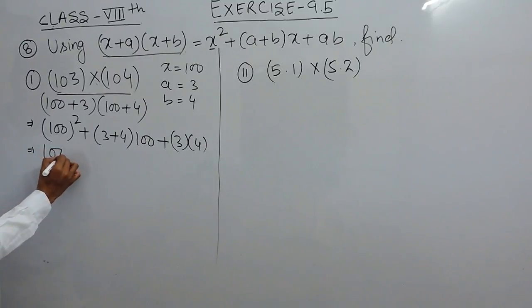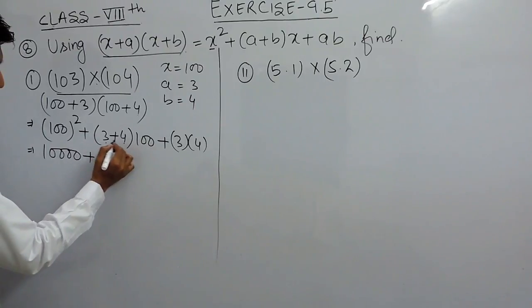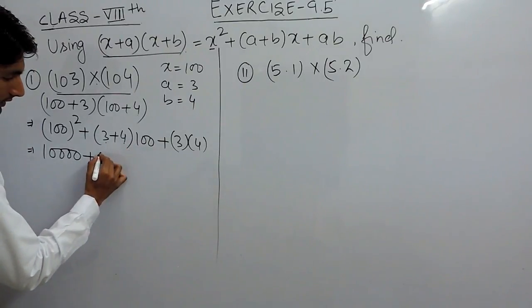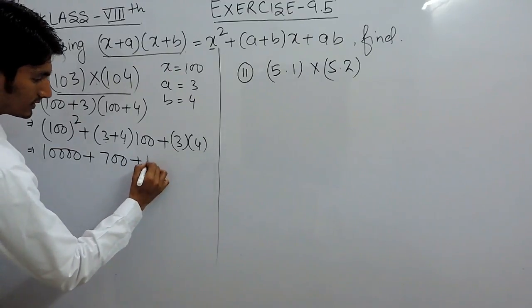So, 100 squared, we know that we have to double the number of zeros present in this 100. So, 100 squared will become 10,000 and 3 plus 4 is 7 and 7 into 100 is 700 and 3 into 4 is 12.